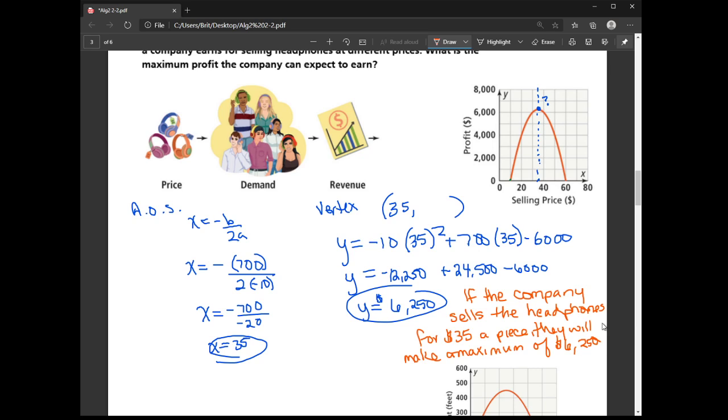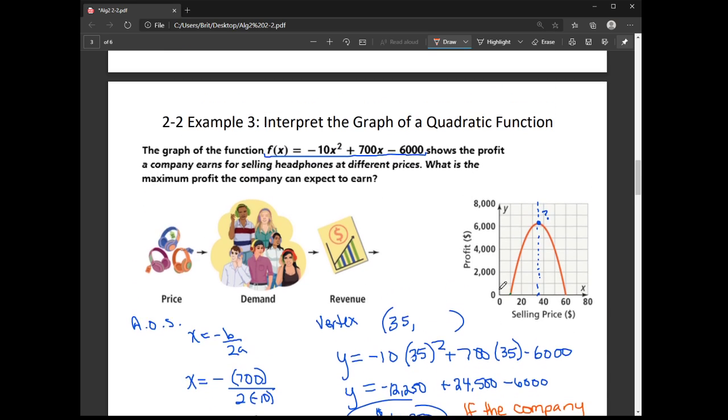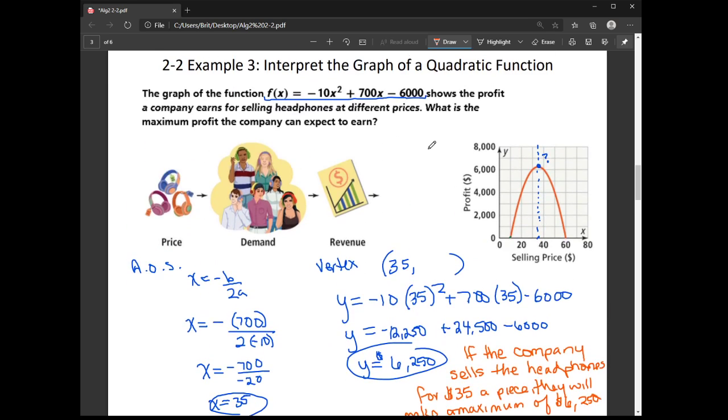I also want to show you guys something kind of interesting about this formula, right? This is written in standard form. So this C value is our Y intercept. Okay, it's somewhere like down here on the graph. And the Y intercept is the amount of profit when the selling price is zero. So if we're just giving these headphones away, we're going to be out 6,000 bucks.